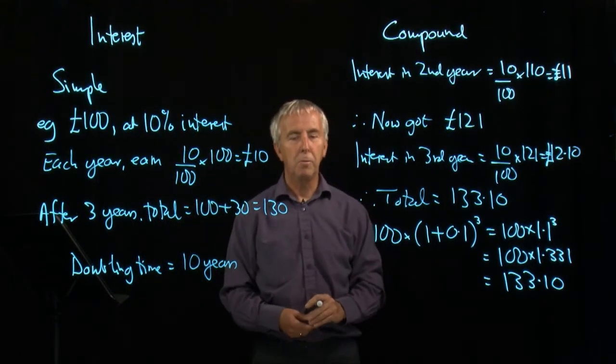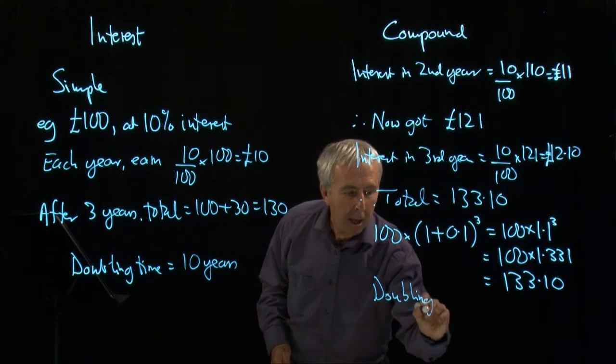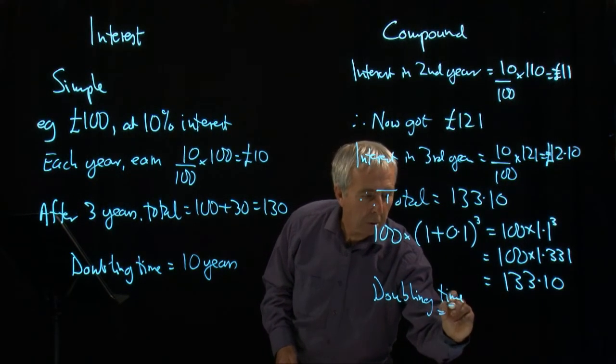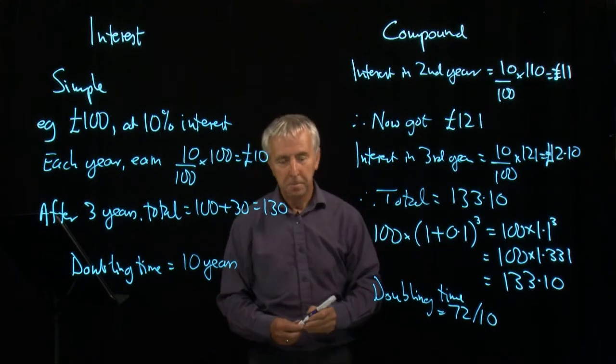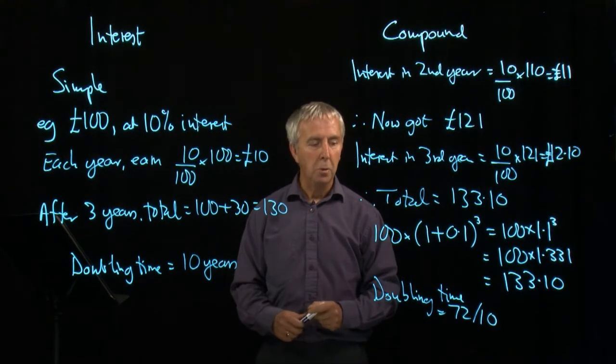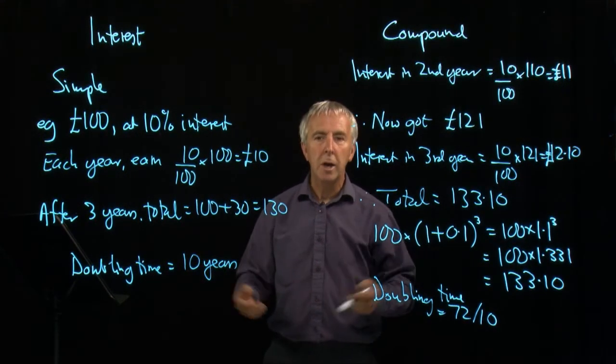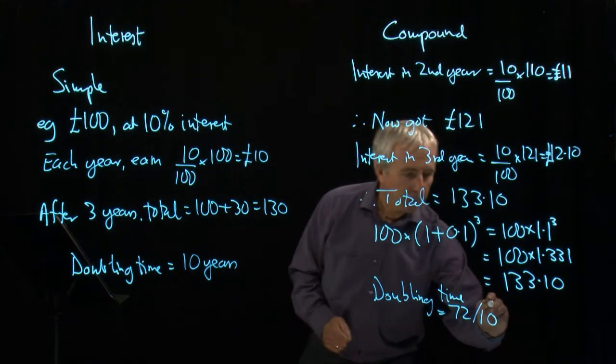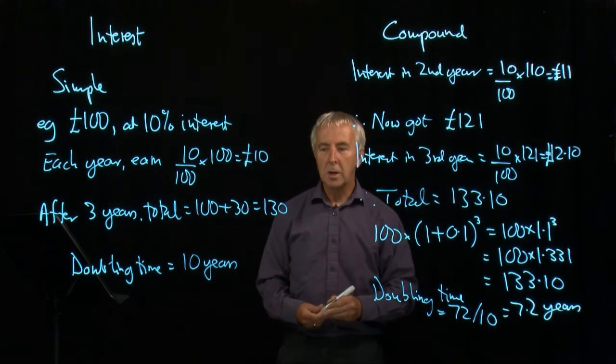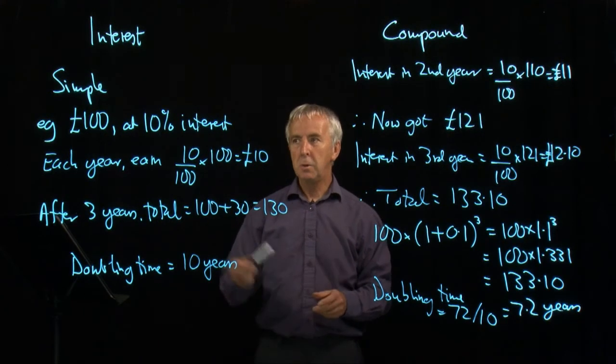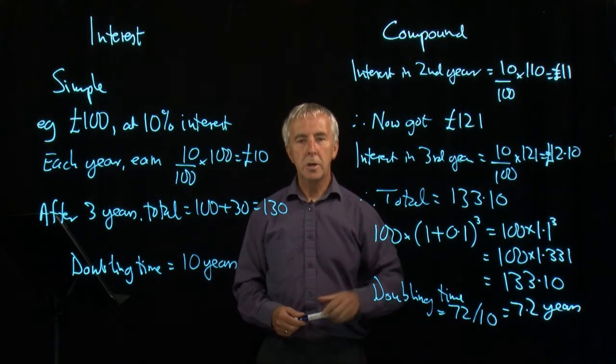There's a very convenient rule of thumb for compound interest which says that the doubling time is called the rule of 72, because you divide your interest rate into 72. This can be shown by a rather more detailed mathematical calculation. It's not exact, but it's a pretty good approximation for interest rates from 1% to 15%. So in that case, that gives us 7.2 years. So as we expect, it's going to double in rather less time than it would have done under simple interest. So that's compound interest, where the actual interest each year is itself increasing.